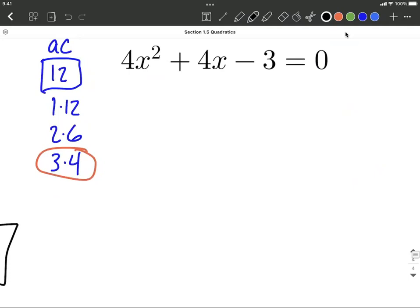Very similar on this other one. A times C also gives us 12, but this time we're looking for the pair that subtracts to make a positive 4. So the pair this time that subtracts to make 4, we're going to have to go with 6 minus 2, we said, makes 4. If this had been an addition, we'd look for the pair that adds together to make the middle number, but ours was a subtraction.